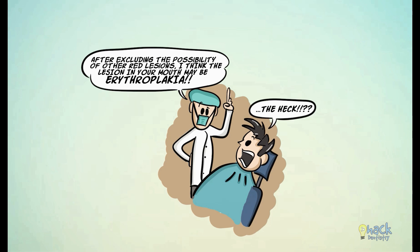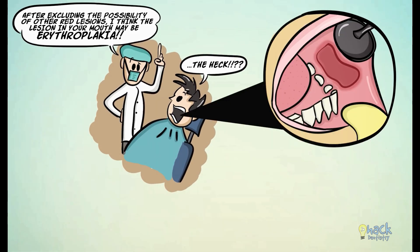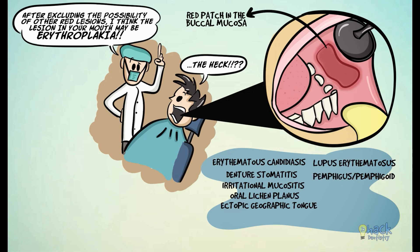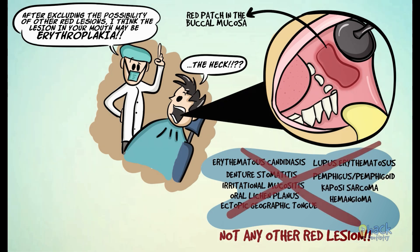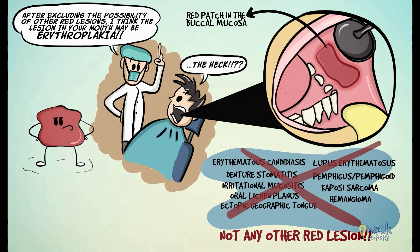To make it easier to understand, let's say you have a patient with a suspicious red patch in the buccal mucosa. Now, since there are several other red lesions that look like Erythroplakia, make sure it is not any of the other red lesions. Only after this could you make a diagnosis of Erythroplakia — hence it is a diagnosis of exclusion.